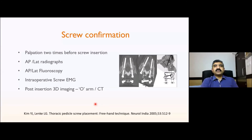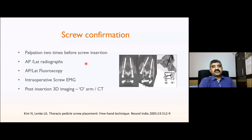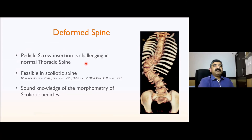To confirm the screw is in good position, you can do fluoroscopy in AP and lateral, or a radiograph in AP and lateral. Sometimes you can use intraoperative screw EMG, or post-insertion 3D imaging if you have the facility — such as an O-arm or intraoperative CT scan.